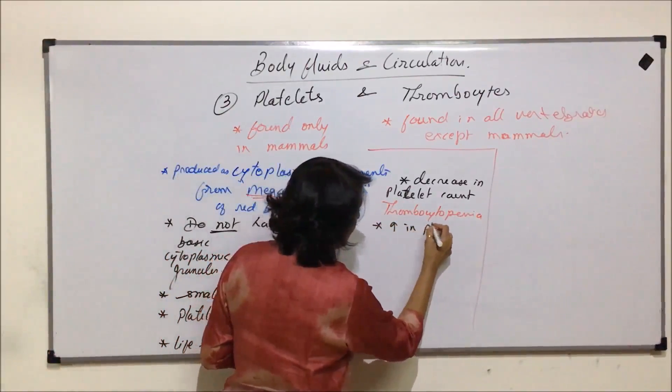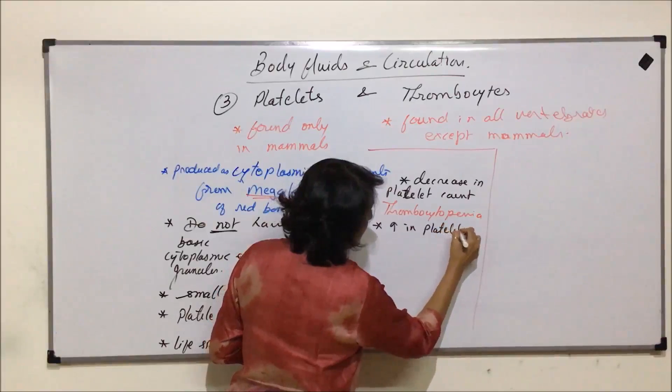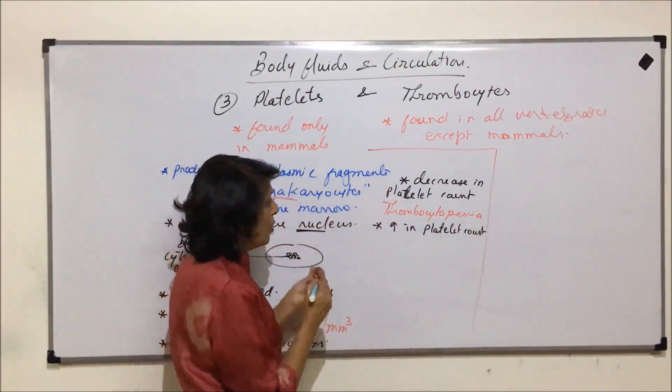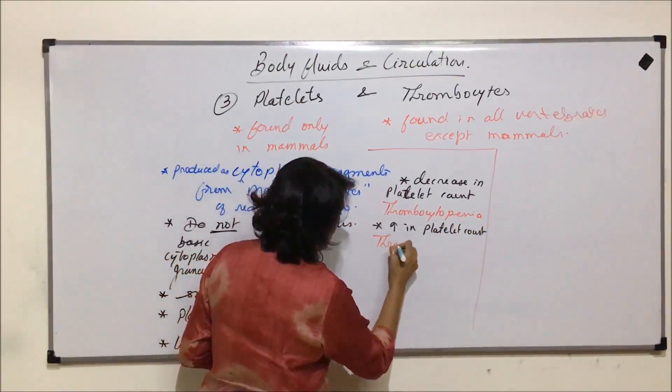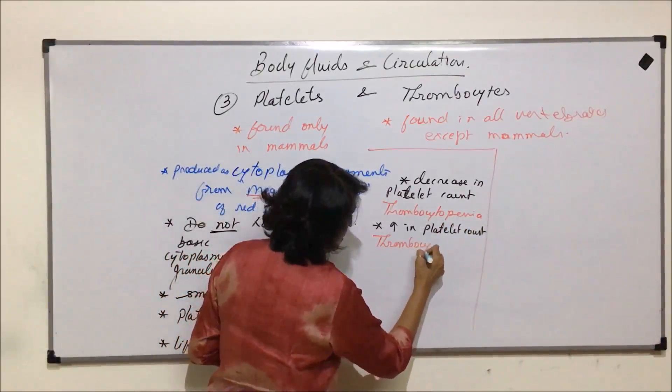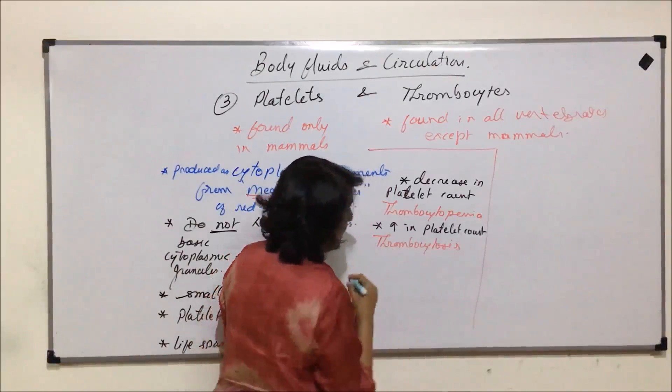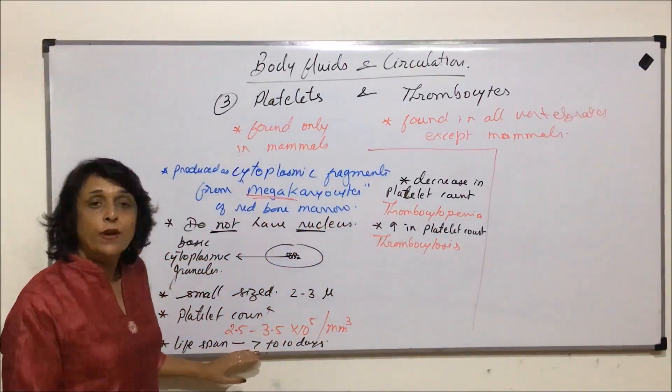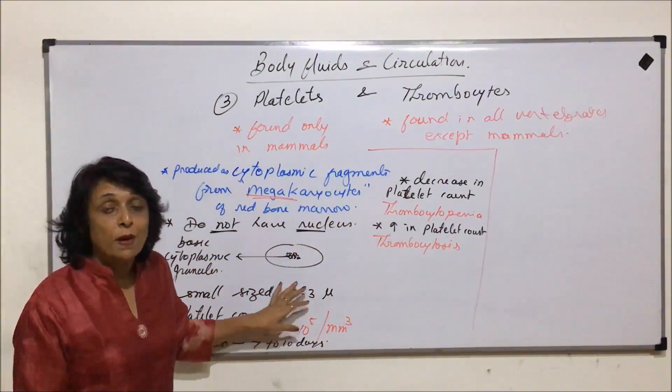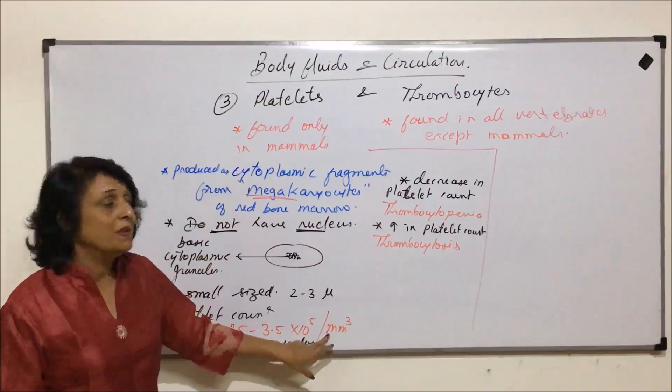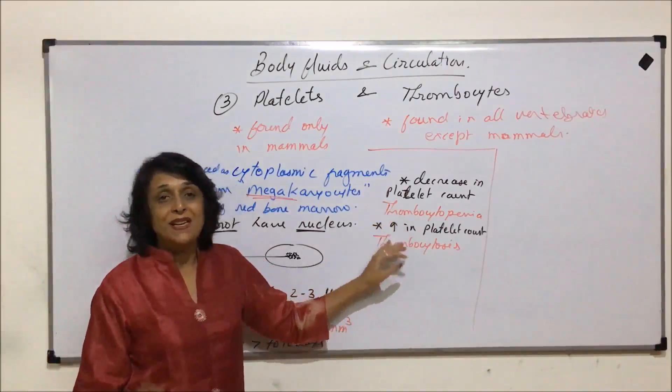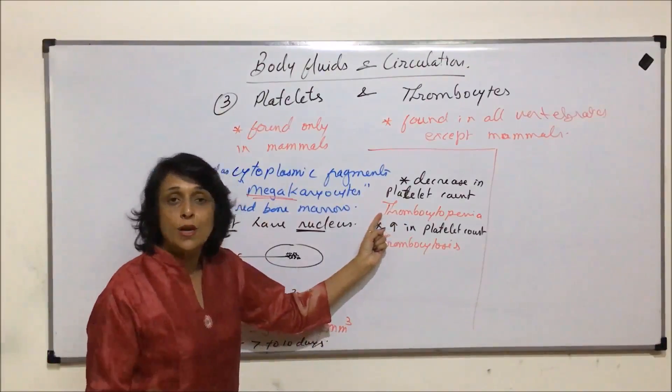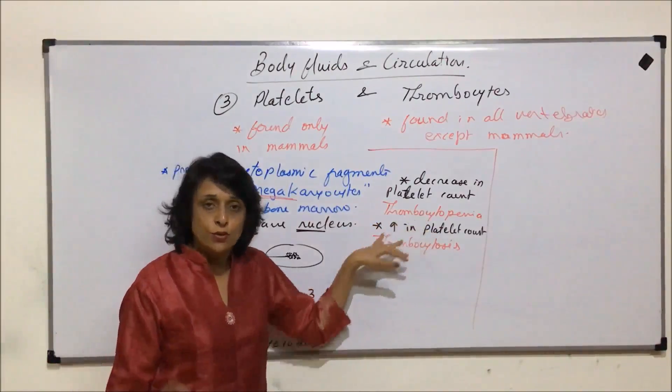And increase in platelet count is known as thrombocytosis. So normal platelet count is 2.5 to 3.5 × 10^5 per cubic millimeter. Increase in number and decrease in number, both conditions are called thrombocytopenia and thrombocytosis respectively.